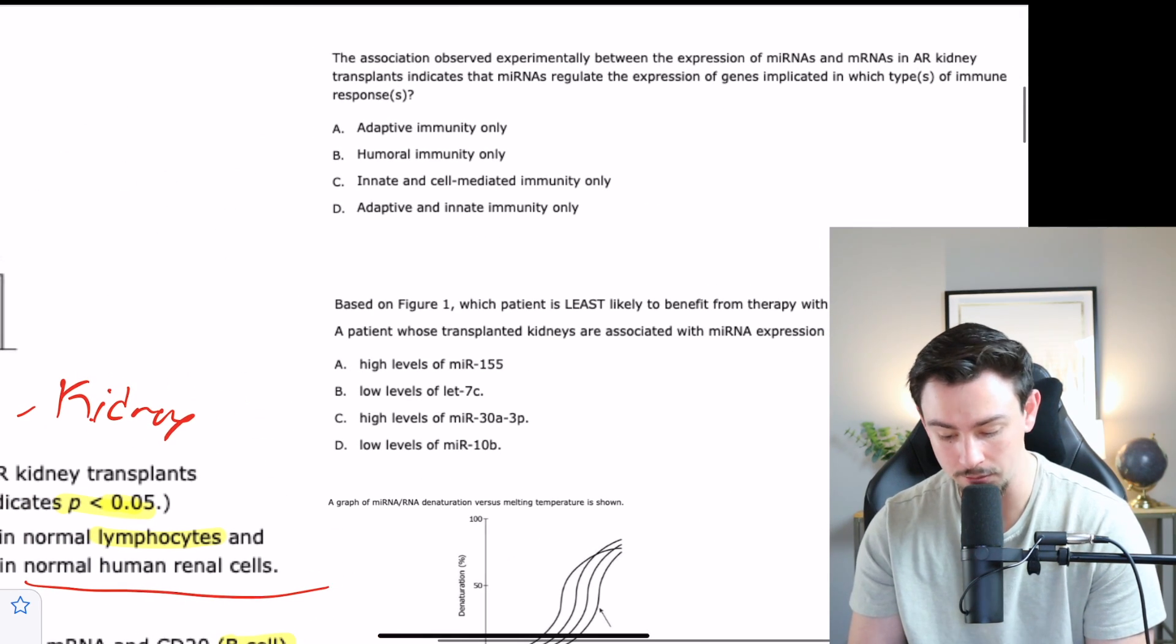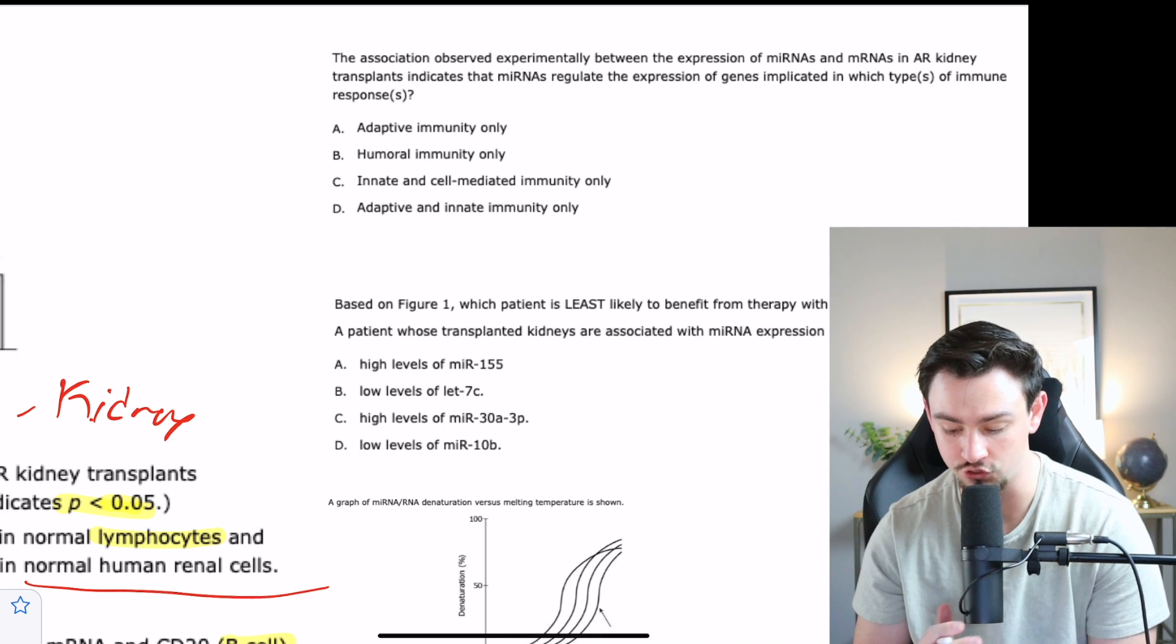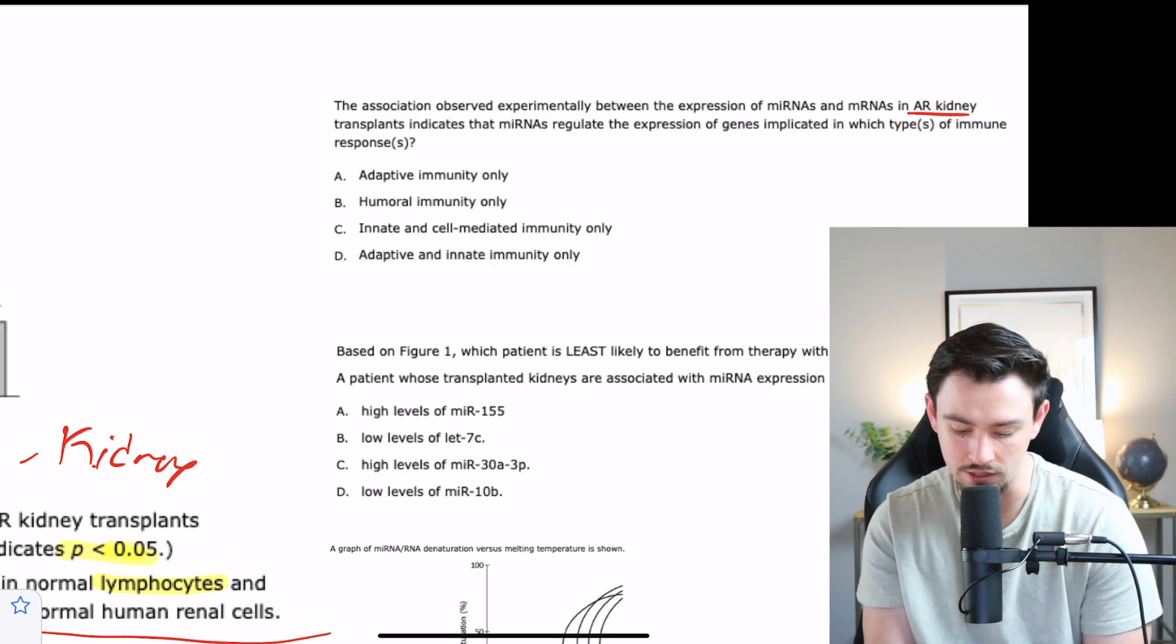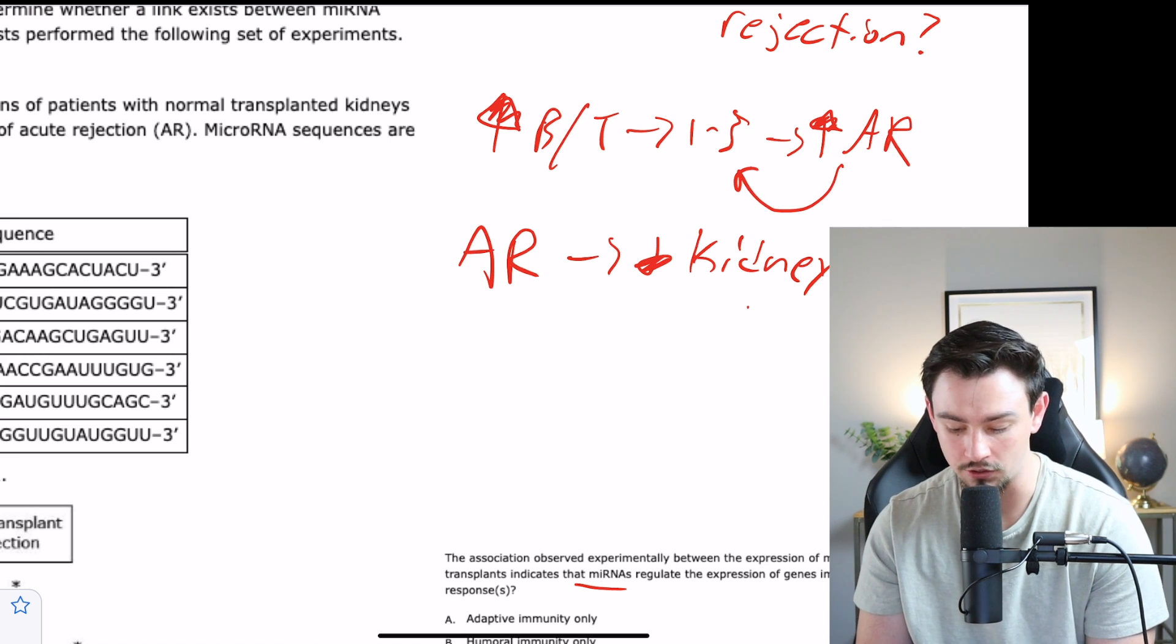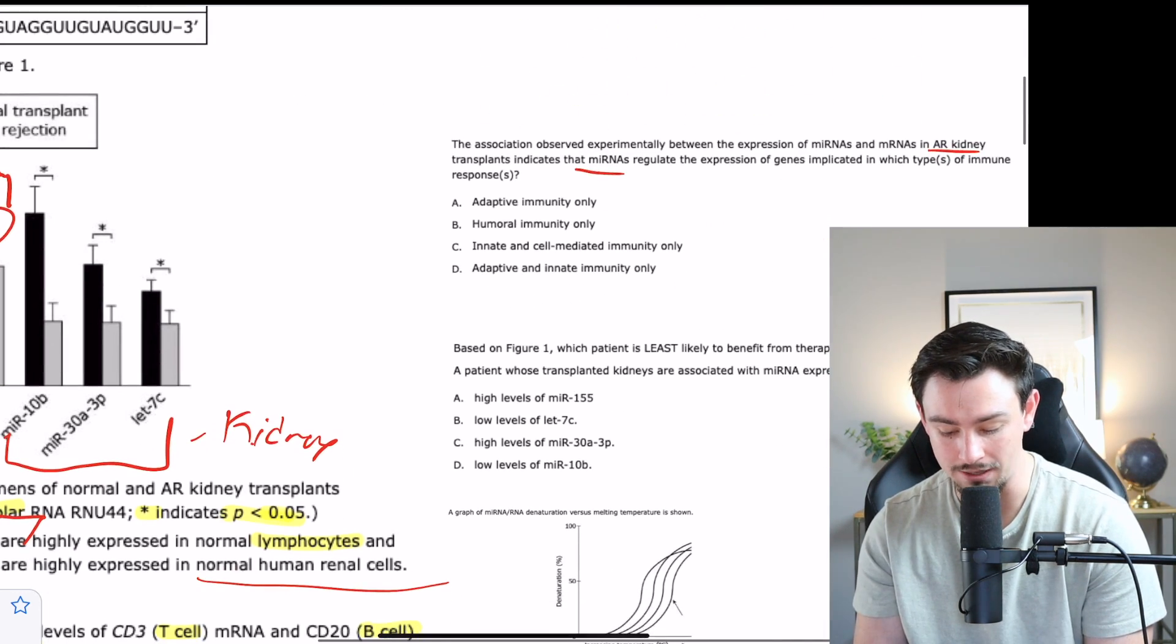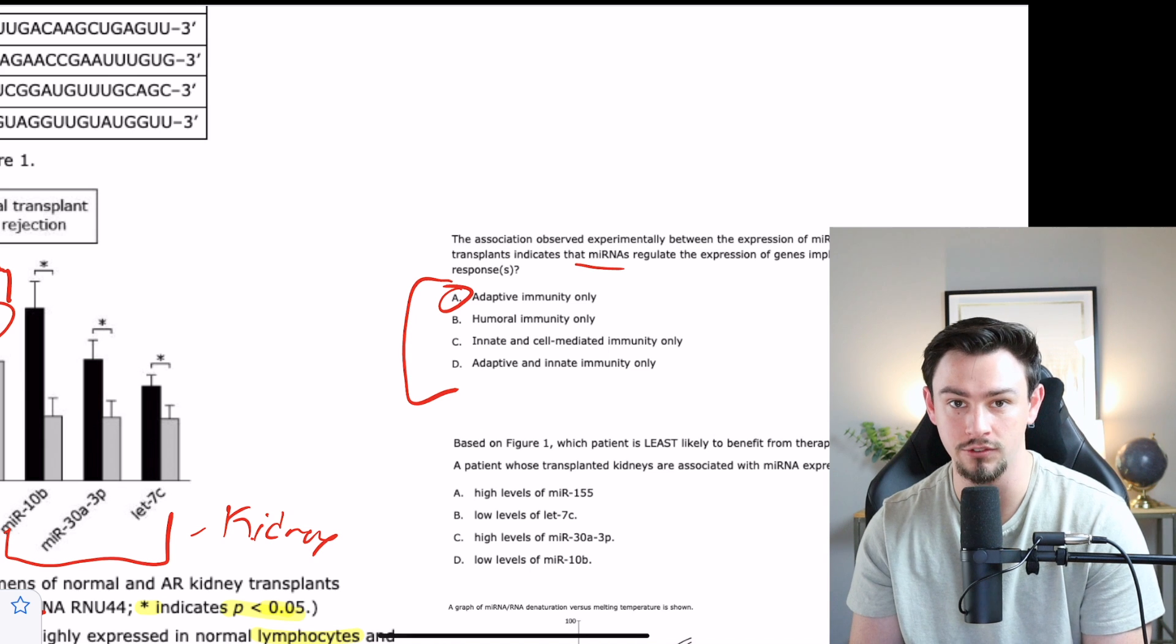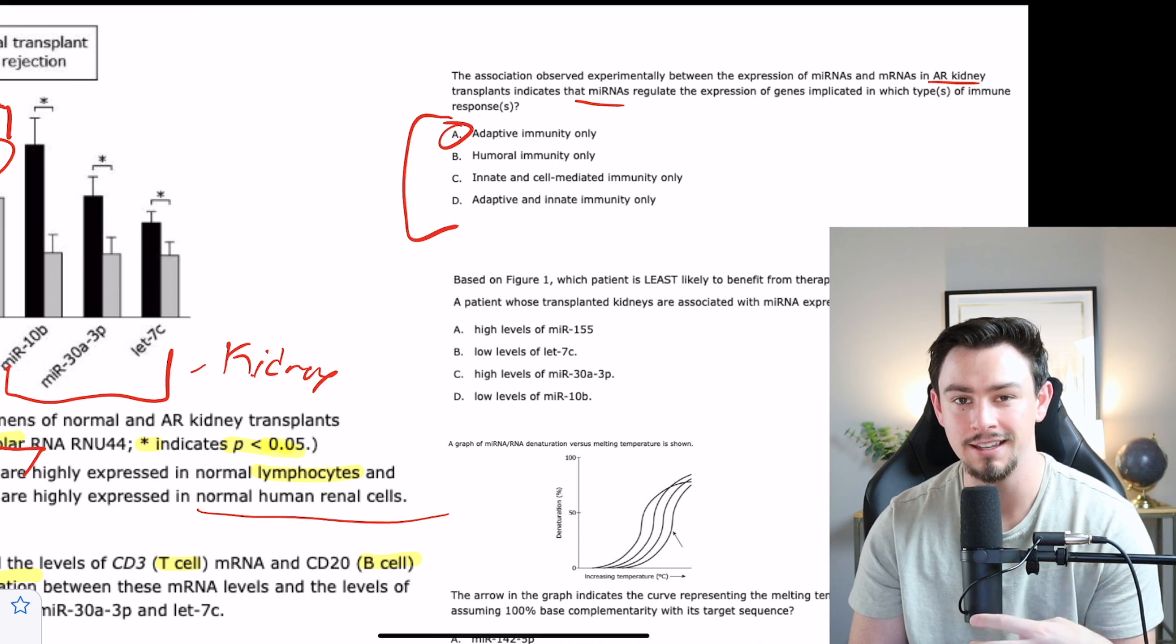Question number one says: the association observed experimentally between the expression of microRNAs and mRNAs in the acute rejection kidney transplants indicates that microRNAs regulate the expression of genes implicated in which types of immune response. Let's rephrase this question: acute rejection kidneys are associated with which microRNAs? We see that the acute rejection kidneys are associated with the first three, which are our B and T cells. That means we're rephrasing this as which of these do B and T cells fit in? B and T cells are associated with the adaptive immune system only. They're the main drivers of it. So that question is A, and I will try to link the video wherever I teach through this subject in the description.